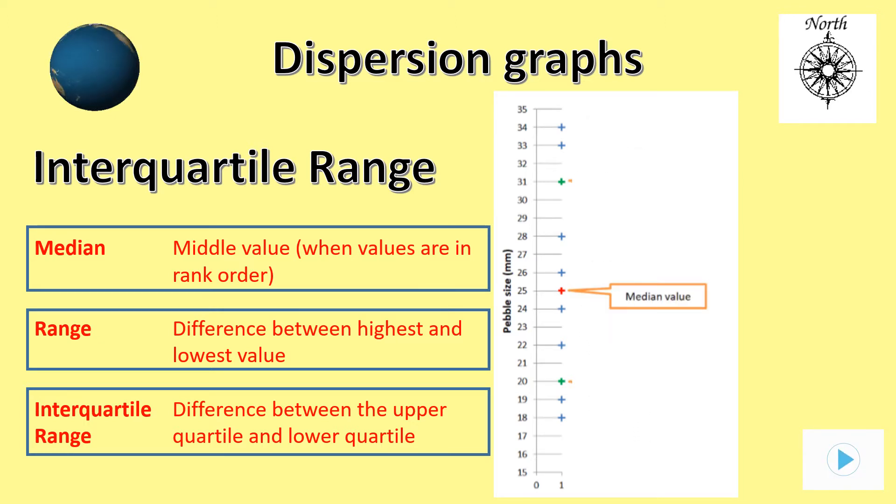To work out the upper quartile value we now ignore the median value and find the actual median value of all the stones above it. In this case there are 5 stones, so it is the value of the third stone which is 31 mm. To work out the lower quartile value we simply repeat the process with the bottom part of the graph remembering to count between the numbers beneath and not including the median value. So in this case we end up with a value of 20 mm for the stone.